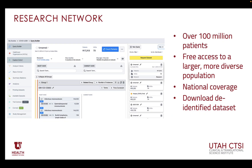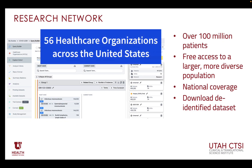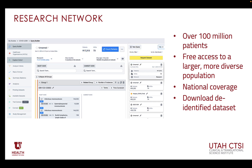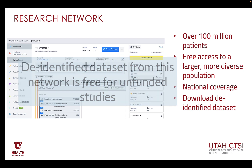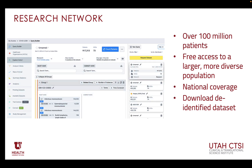The Research Network comprises about 56 healthcare organizations scattered all over the United States. Through this network, researchers at the University of Utah can potentially collaborate with over 50 healthcare organizations. You can also create your cohort and download the identified datasets. Presently, datasets from this network are free for unfunded studies.